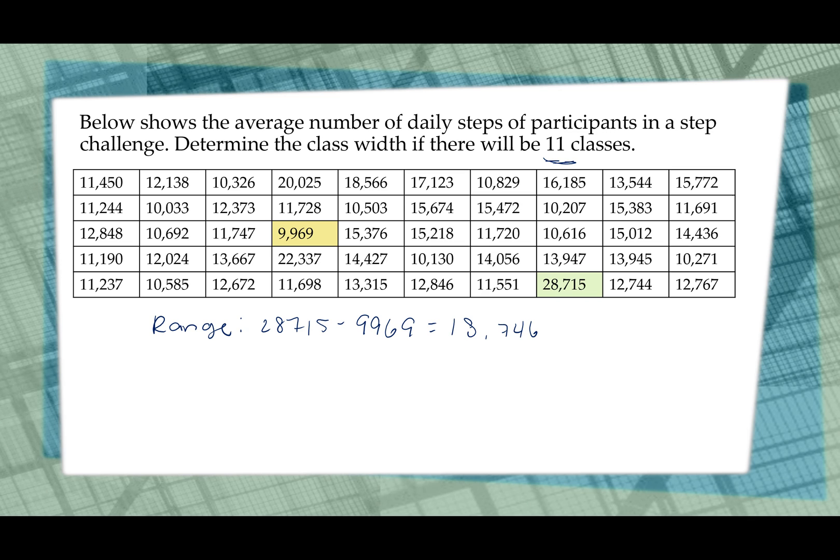We want 11 classes here. So we're going to take that value, 18,746 and divide it by 11. And when we do that is actually an approximation, not an exact, but we get approximately 1,704.1 or 0.2, whatever you want to do here. But either way, it doesn't matter what we do here, right? Because what is either the one or the two going to do? We bump up for class width. So that means that a class width in this example would need to be 1,705. These have been examples of determining class width.